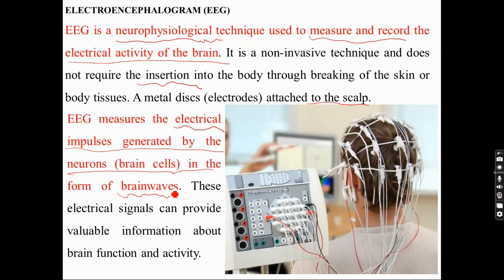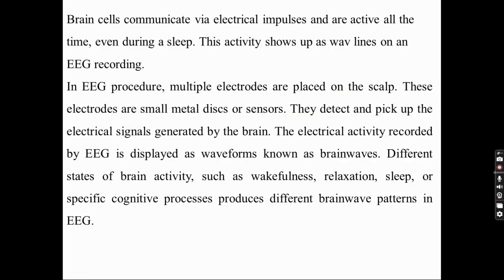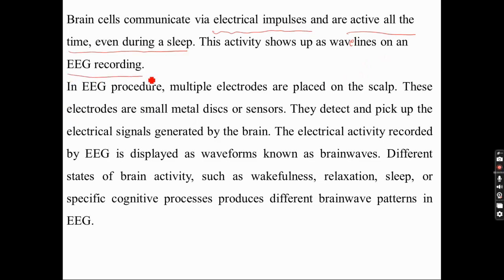These electrical signals can provide valuable information about brain function, and the activity taking place in the brain is predicted on the basis of EEG. Brain cells communicate via electrical impulses and are active all the time — even during sleep. This activity shows up as wave lines on an EEG recording, meaning brain activity can be detected even during sleeping.